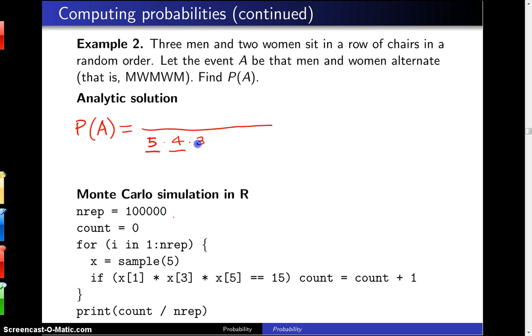Four in the next chair, three in the next chair, two, and then finally one in the right-hand chair. So we have in the denominator here five factorial, which is 120 different ways that people can be seated.